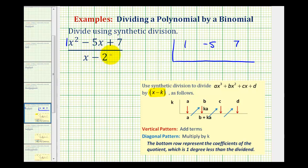Next, since we're dividing by x minus two, we're going to have a positive two out here. This number here is always going to be the opposite sign of the constant term in our divisor in the form of x minus k. Notice in our notes, if we're dividing by x minus k, we use the value of k out here.